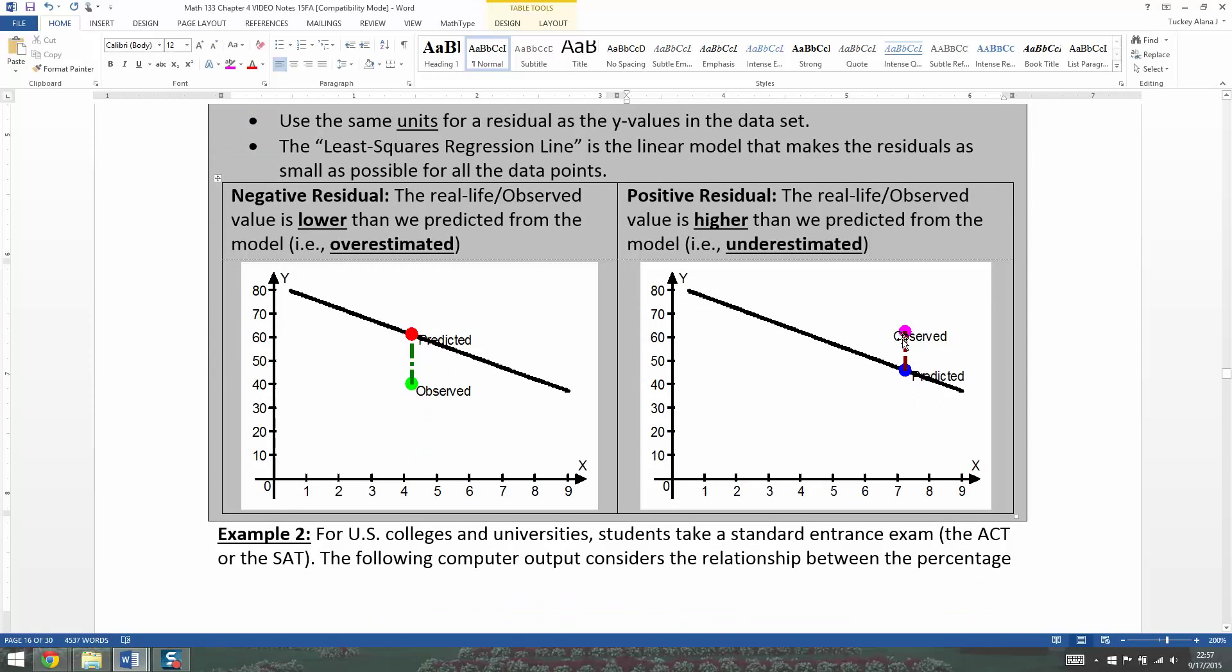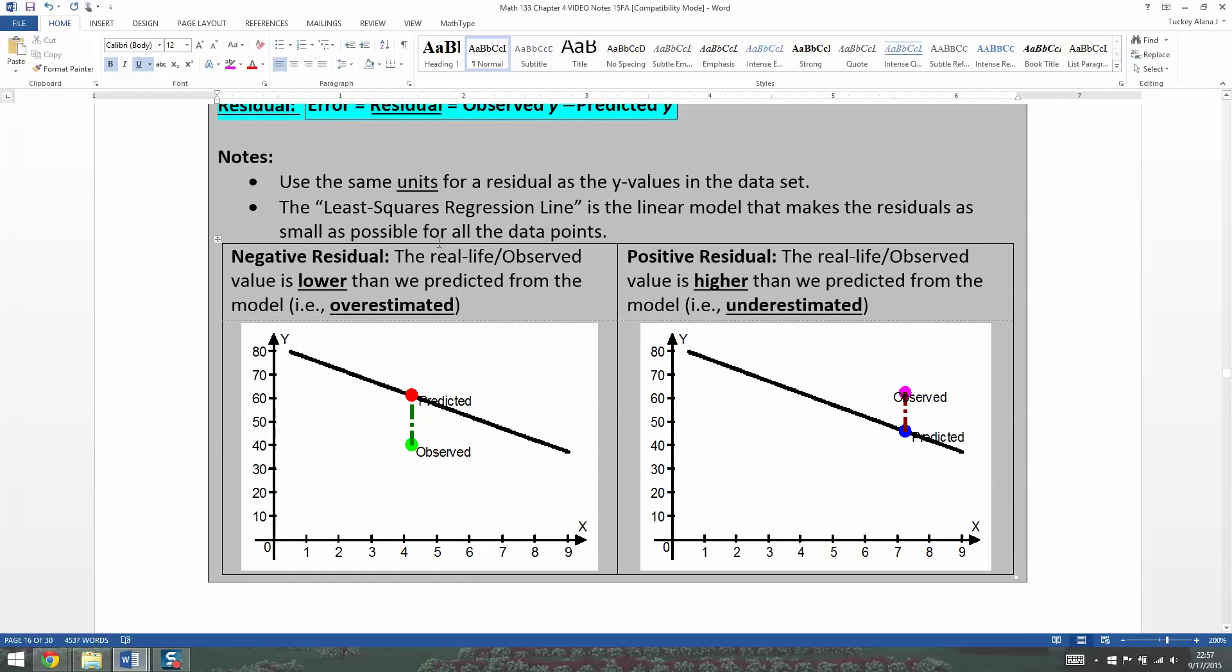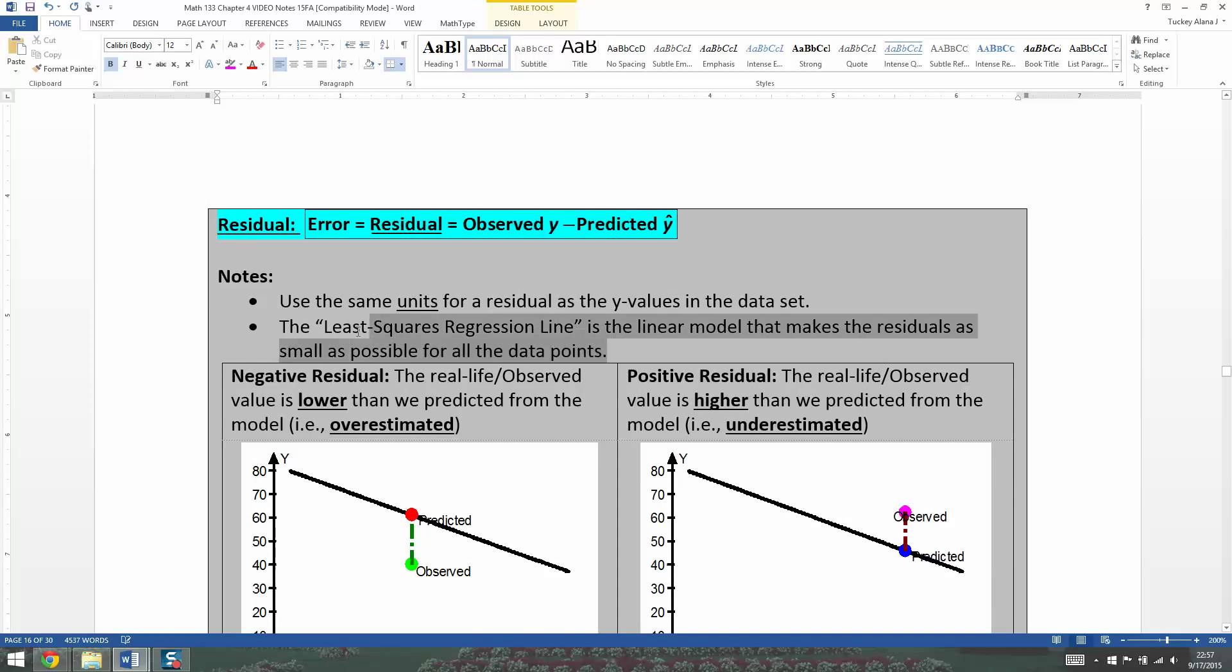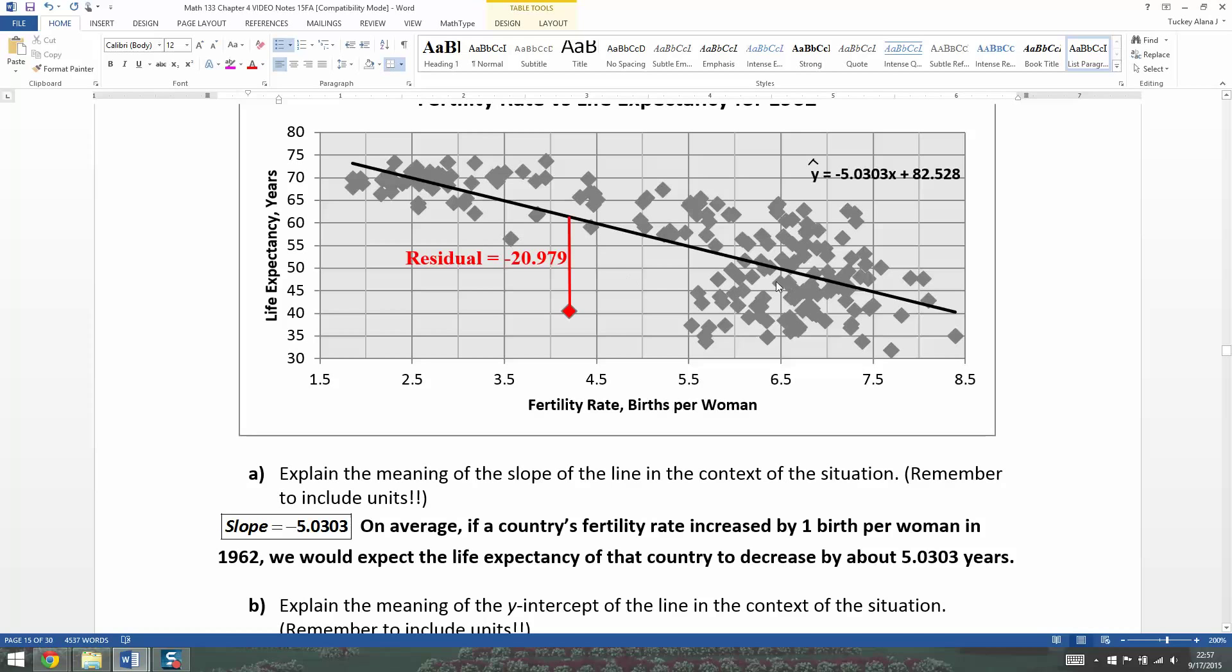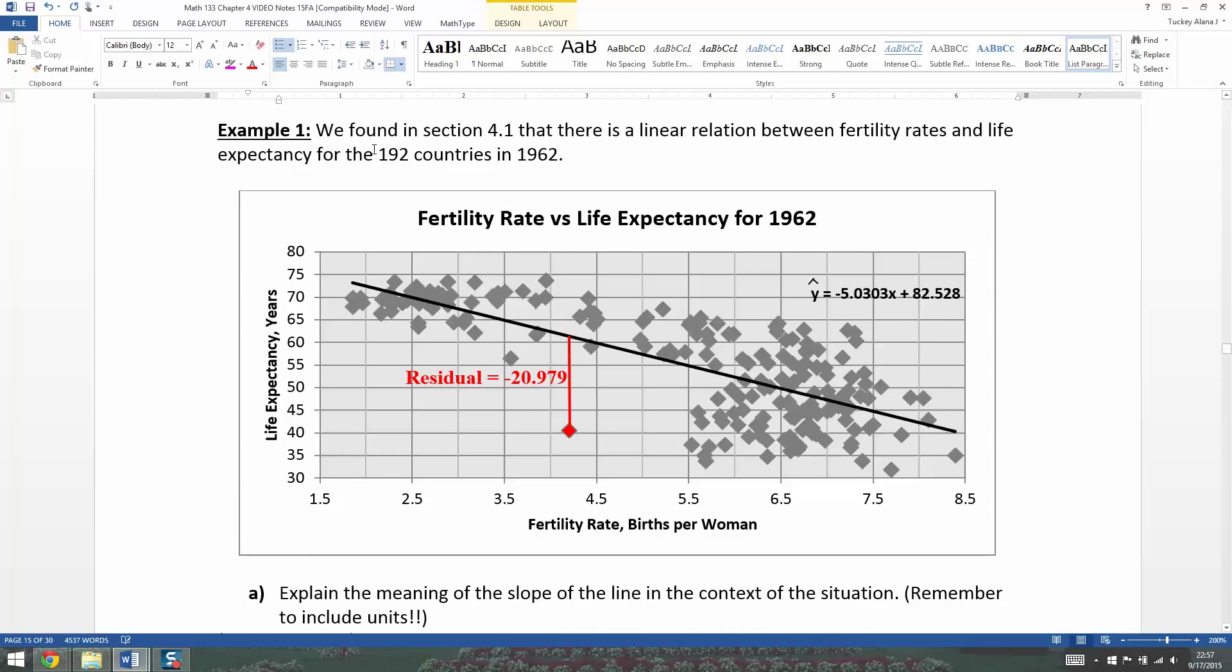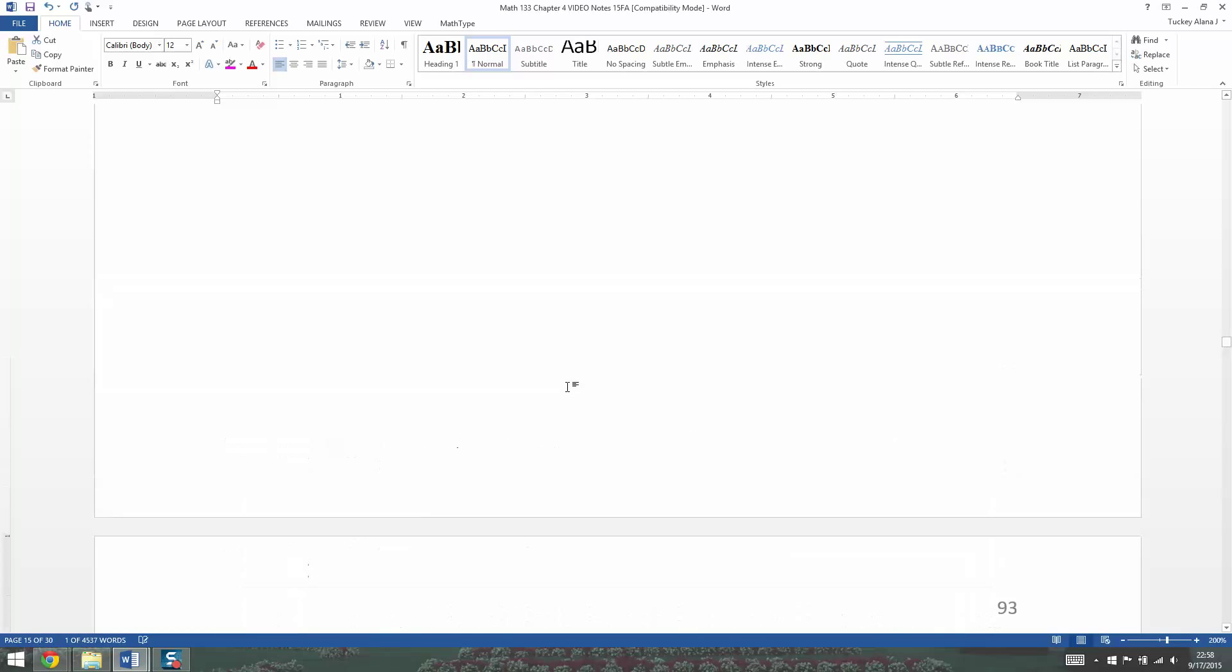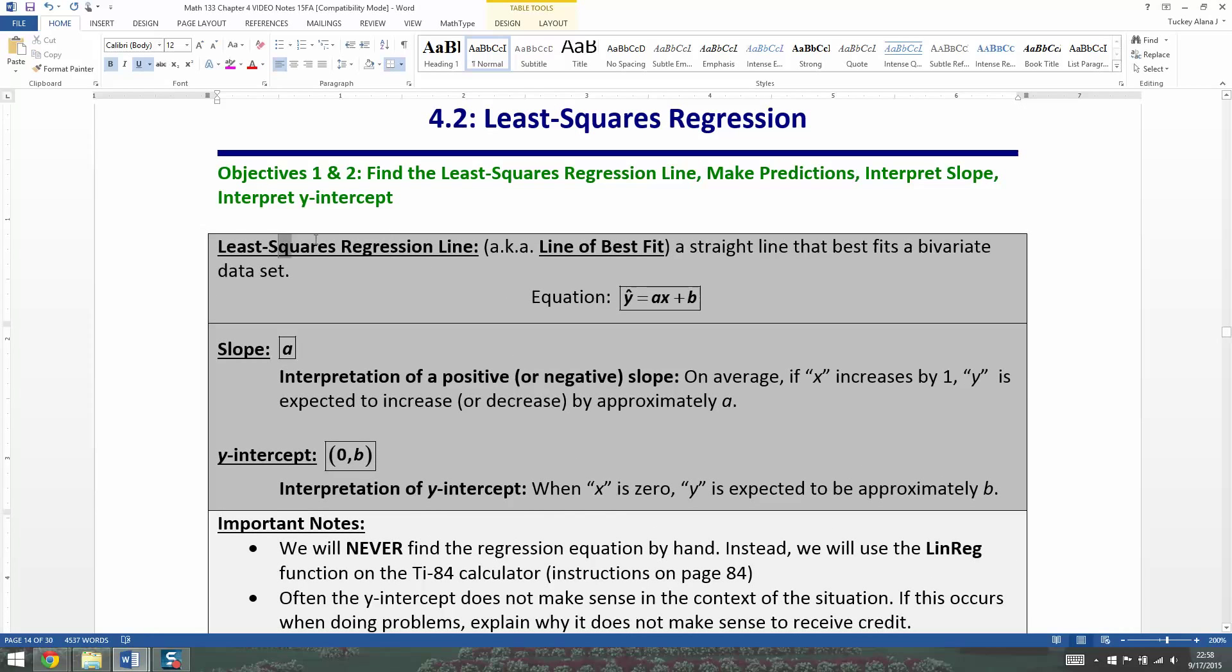Now the thing about a least squares regression line is it's the line that makes all those residuals as small as they can be. When you look at this graph, we only did Gabon. But every single one of these countries, and there's 192 of them, had their own vertical line. Every single dot has its own little vertical line. Some are really short, like this dot right here that's really close to the line. And some are really far away, like Gabon. The thing about this black line that we draw is it's the best line. It's the line that makes those residuals the smallest they can be. That's why it's called sometimes the least squares regression line. Because what they do is they take the residuals and they square them all to make them positive and then minimize them. Make them as small as they can be for all the data.